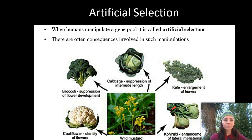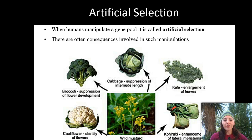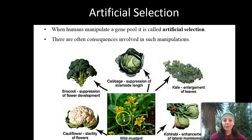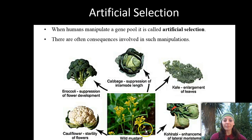Before ending, let's talk about artificial selection, which is exactly what it sounds like — artificial or human-caused manipulation of a gene pool, often with consequences. Wild mustard has been manipulated into many different crops we now grow and consume: cauliflower by sterilizing its flowers, broccoli by suppressing flower development, cabbage by suppressing the internode length, kale by enlarging the leaves, and kohlrabi through the enhancement of lateral meristems.